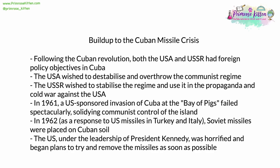Following the revolution, Cuba became a hostile-to-the-US communist state located only about 90 miles off the US Florida coast. Both the USA and the USSR had foreign policy objectives in the country. The USA wished to destabilize and ideally overthrow the communist regime, setting up its own puppet democratic government. The USSR wished to use it in the propaganda and cold war against the USA. In 1961, a group of Cuban émigrés tried to invade with the aim of toppling the regime — known as the Bay of Pigs incident. This failed spectacularly when the US government, fearing Soviet retaliation, withdrew their air support, solidifying communist control of the island and providing a major propaganda victory for Castro and his Soviet backers.